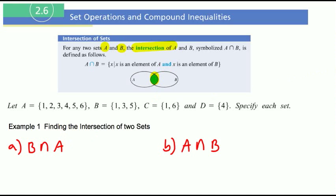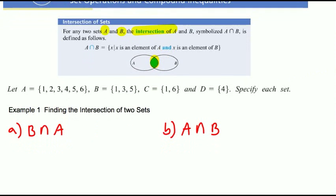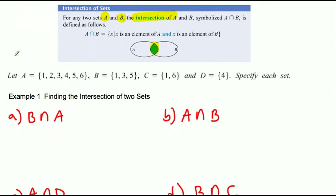For example, 1A. Okay, so we're given set A, B, C, and D, and we're trying to find the intersection of A and B. So here's the intersection, or actually here's A, and here's B. What do they have in common, right? Because that's what it means when they intersect. So it's whatever they have in common.